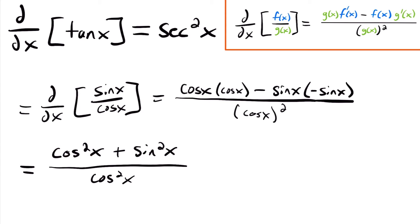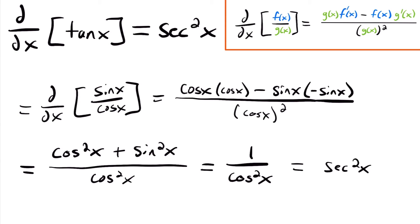Using the Pythagorean trig identity, cosine squared x plus sine squared x equals 1. So we can rewrite this as 1 over cosine squared x, which equals secant squared x, since 1 over cosine is secant. That's how you get from the derivative of tangent x to the answer of secant squared x.